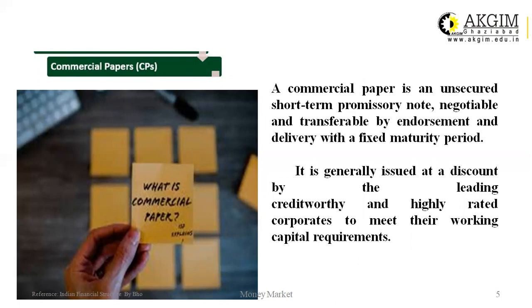The next instrument of the money market is a commercial paper. A commercial paper is an unsecured, short-term promissory note, negotiable and transferable by endorsement and delivery, with a fixed maturity period. It is generally issued at a discount by leading creditworthy and highly rated corporates to meet their working capital requirements. For example, if Mukesh Ambani needs funds for Reliance Jio's working capital requirement, he can issue a commercial paper for the same.